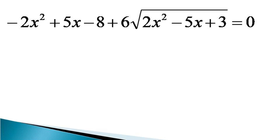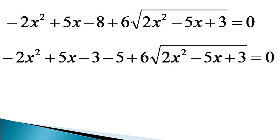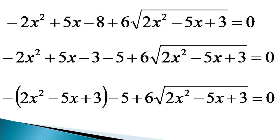This equation can also be expressed as minus 2x² plus 5x minus 3 minus 5 plus 6 under root (2x² minus 5x plus 3) is equal to 0, where minus 8 is expressed as minus 3 minus 5. Taking minus sign common from the first three terms, the equation is written as minus (2x² minus 5x plus 3) minus 5 plus 6 under root (2x² minus 5x plus 3) is equal to 0.